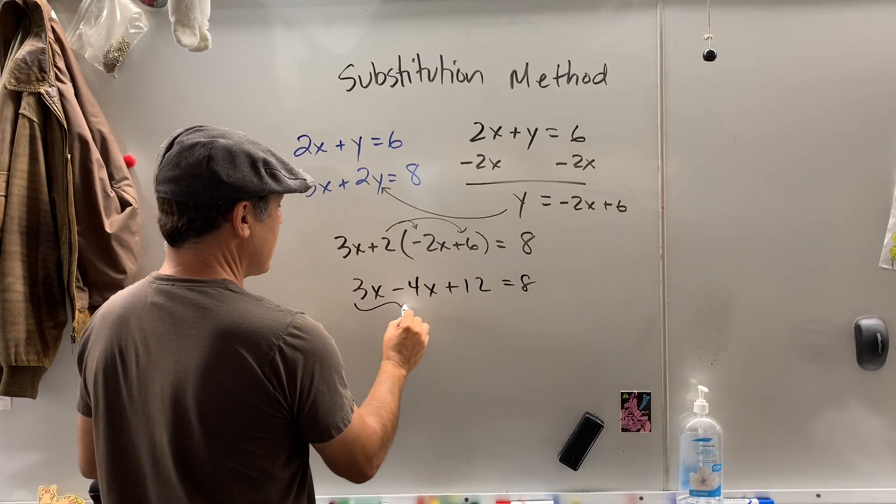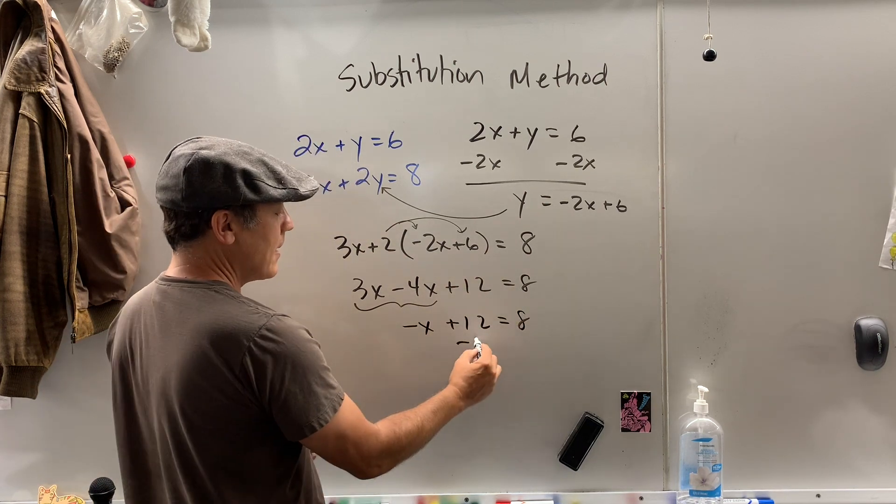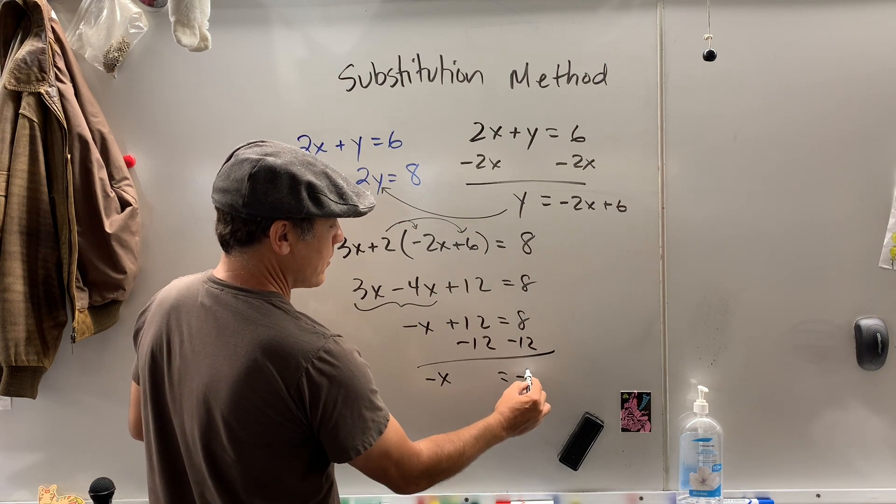Let's combine these like terms. So that's negative x plus 12 equals 8. Subtract 12 on both sides. Negative x equals negative 4.